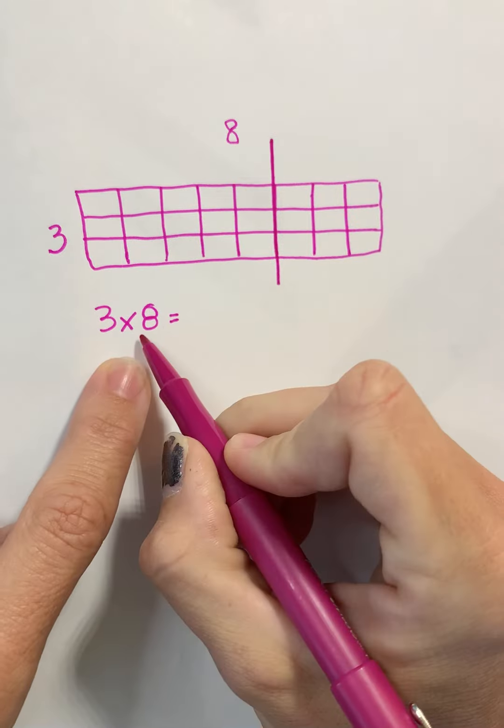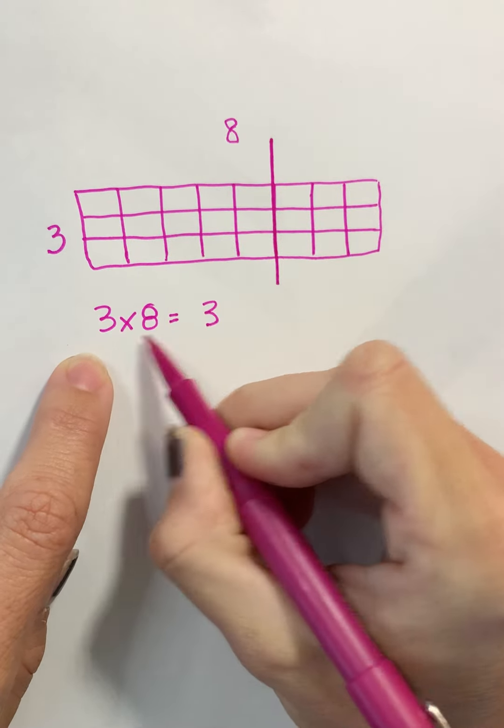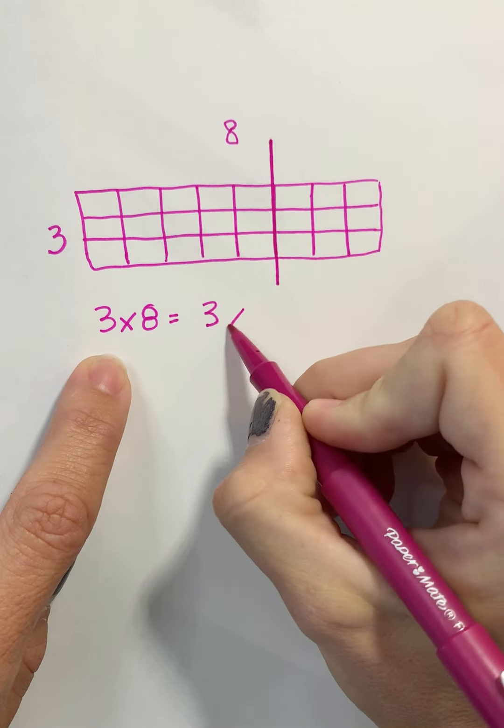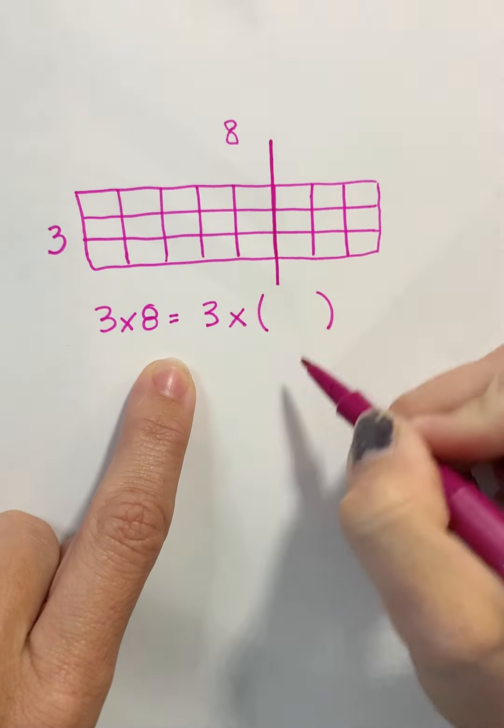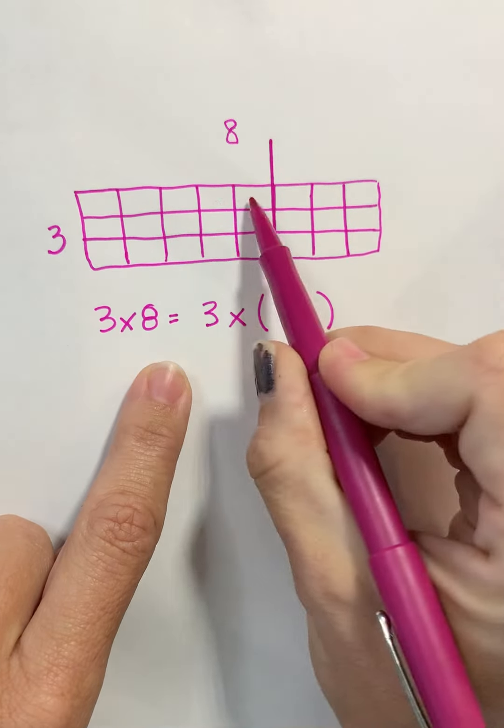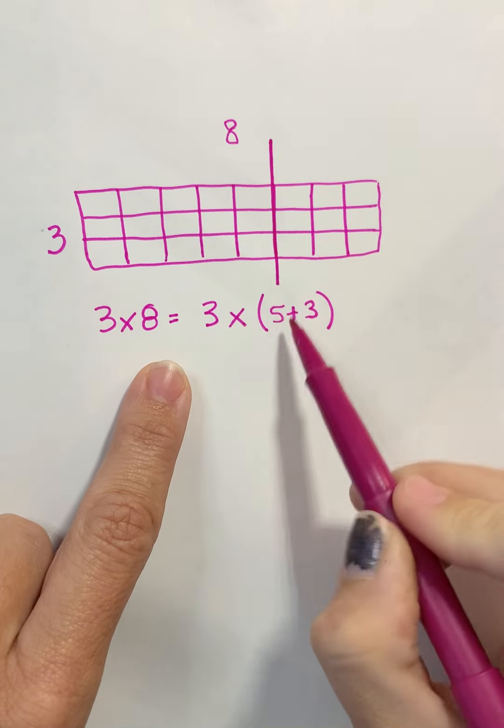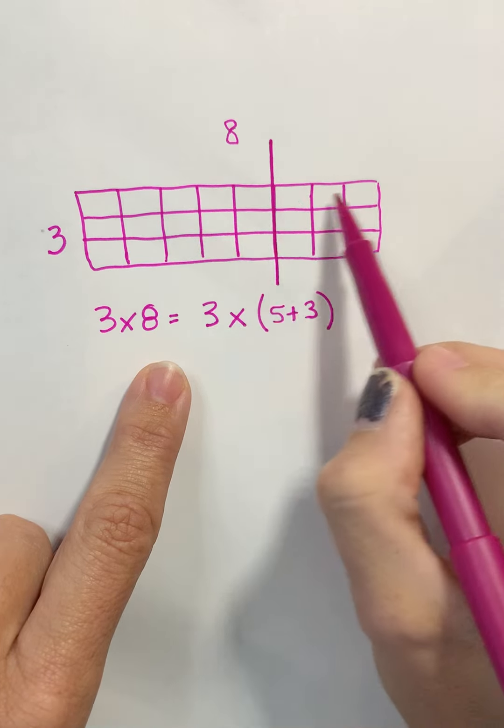So now I kept my 3. I didn't change my 3 so I'm gonna keep my 3 here and I'm gonna keep my multiplication sign and what I did is I broke apart this 8 and now I have 5 and 3. So instead of writing 8 here I'm writing 5 and 3.